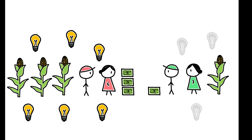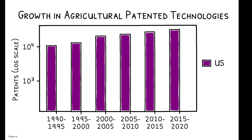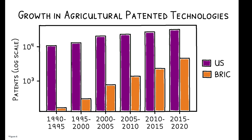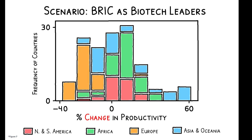How might this change in future? Consider two ongoing scenarios. First, while the US and Western Europe have led biotech investment for the past several decades, there has been rapid growth in Brazil, Russia, India, and China. Because these countries span a wider range of ecological diversity, their rise as biotech leaders is predicted to increase productivity by 18.5 percent on average, with countries in Africa particularly standing to gain. But there are also clear losers: countries in Asia and Europe who have benefited from their ecological similarity to the current frontier.